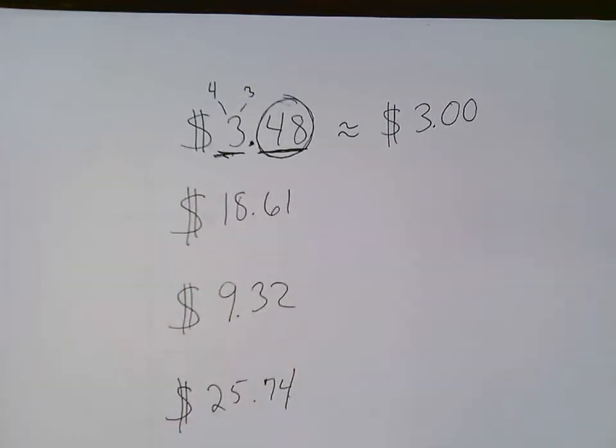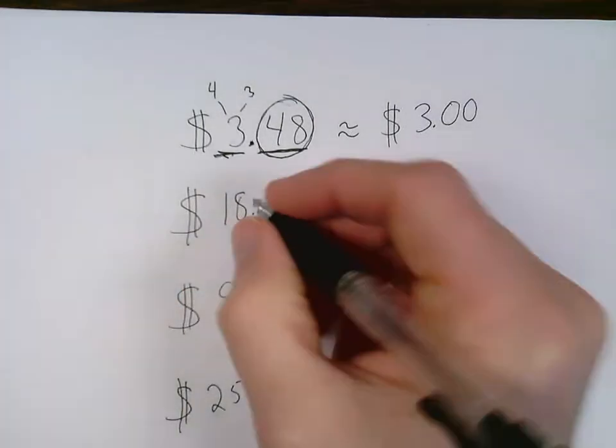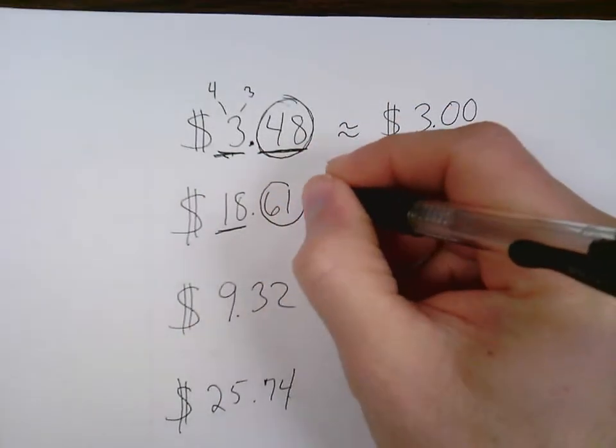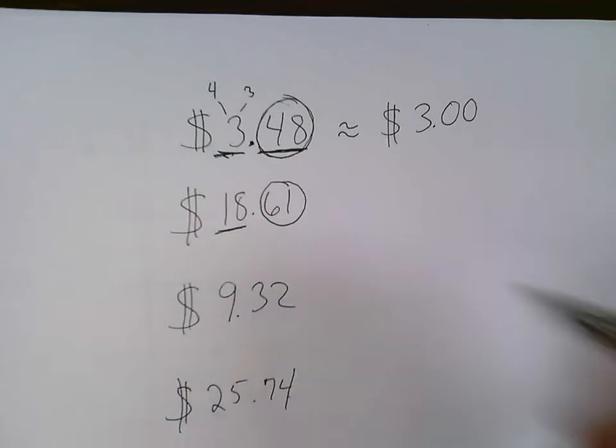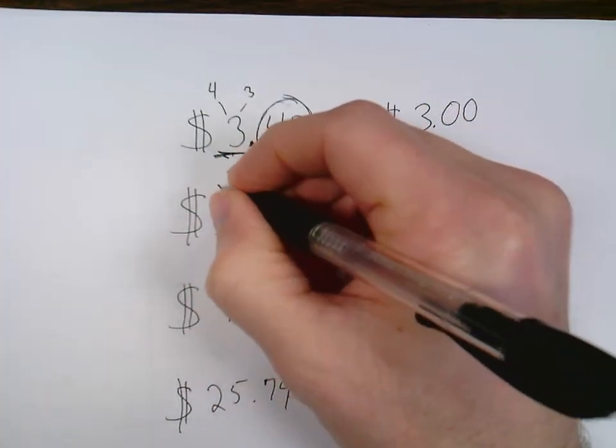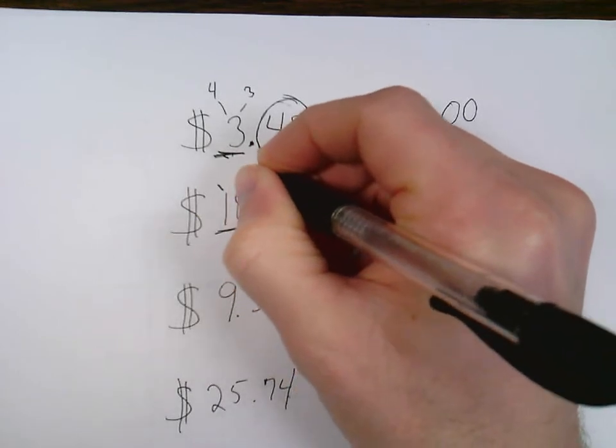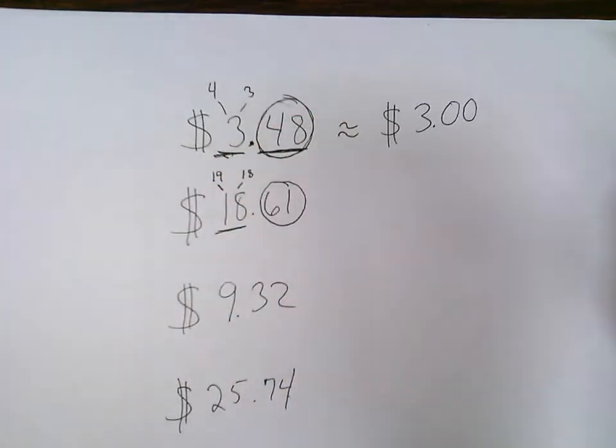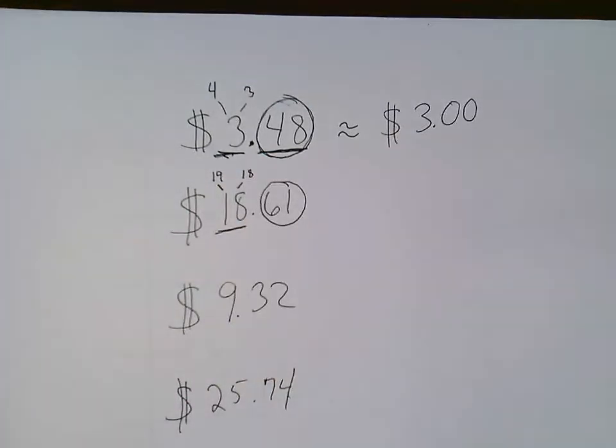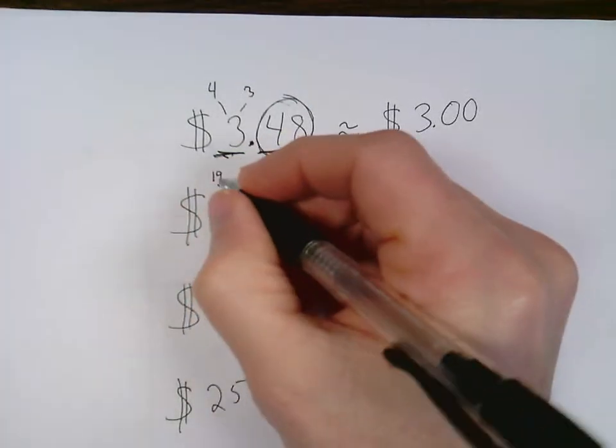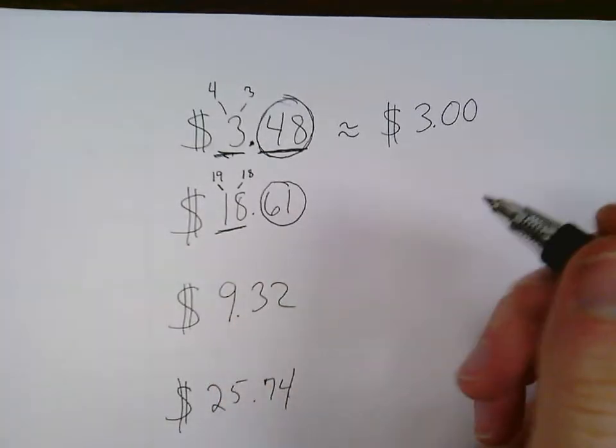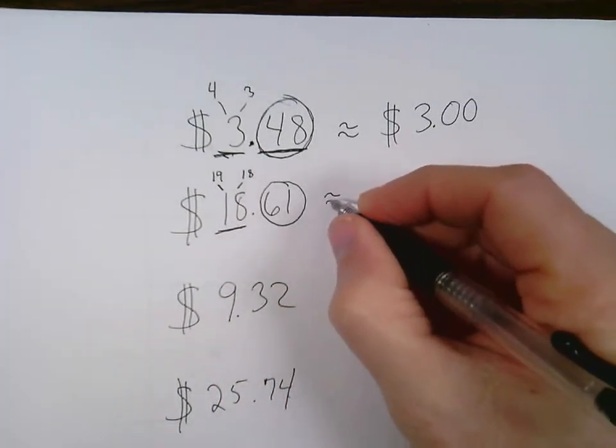$18.61, same exact thing. I'm going to underline all that. I'm going to underline all my dollars and I'm going to circle all my cents. Now this dollar amount will either stay the same or it will go up one. So it will either be a 19 or an 18, and it really doesn't matter which side you put those numbers on. You can do either which way. You can say 18 on this side, 19 on that side, just so you know that that number there is either going to stay an 18 or a 19.